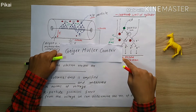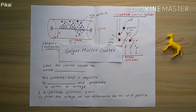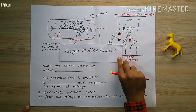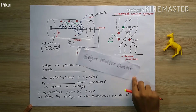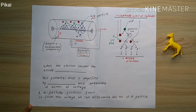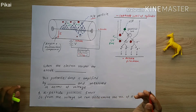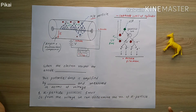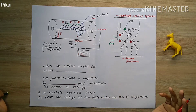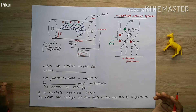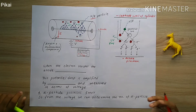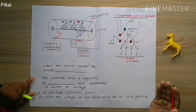Hello, today we're going to discuss the Geiger-Muller counter. The Geiger-Muller counter is an instrument used for measuring ionizing radiation, mainly caused by alpha and beta particles.